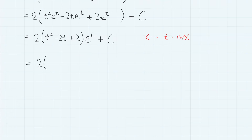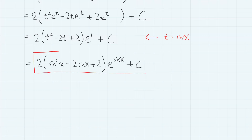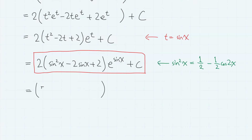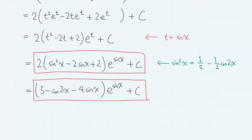So substituting back, we have (2 sin squared x minus 2 sin x plus 2) times e to the power of sin x plus c. Or using the sine half-angle formula, we can also write this as (5 minus cos 2x minus 4 sin x) times e to the power of sin x plus c, which is an alternative expression for the answer.